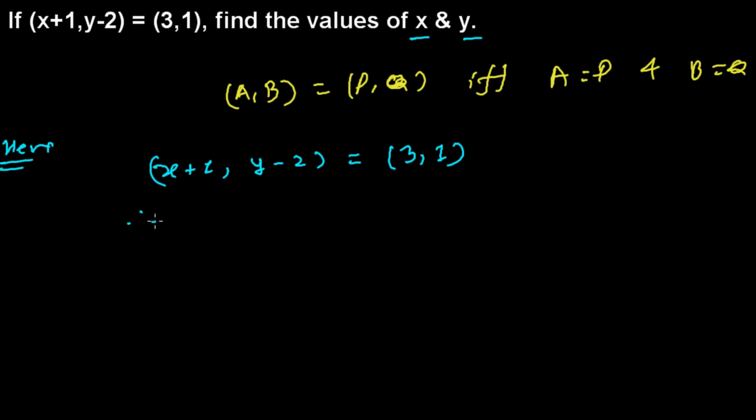Since both are equal, therefore we can say that x+1 equals to 3 and y-2 equals to 1. So, further x is going to be 3-1 and y is going to be 2+1.